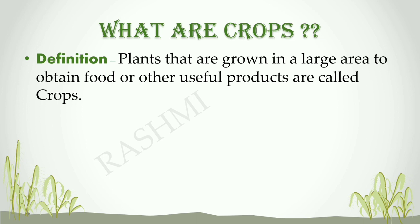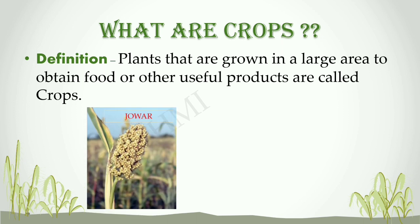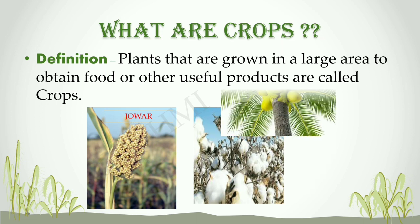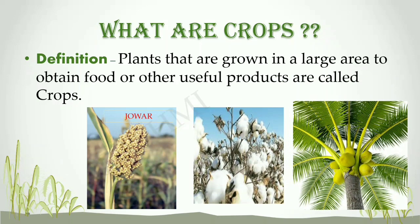For example, rice grows best in clay soil with plenty of water and warmth, whereas wheat needs well-drained soil. Jowar and bajra grow well in sandy soil. Cotton needs black soil, and coconuts grow in sandy soil near the seacoast.